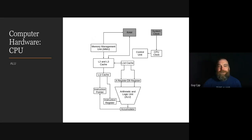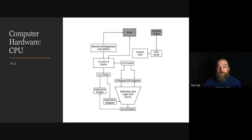For example, when adding two numbers, one number is placed in the A register, another in the B register, and the add instruction is put in the instruction register. The ALU performs the addition and puts the result in the accumulator, and the accumulator content is then placed in the cache for later use. Similarly, for logical operations like AND, OR, or EXCLUSIVE OR, there are two inputs, one instruction, and one output stored in the cache.